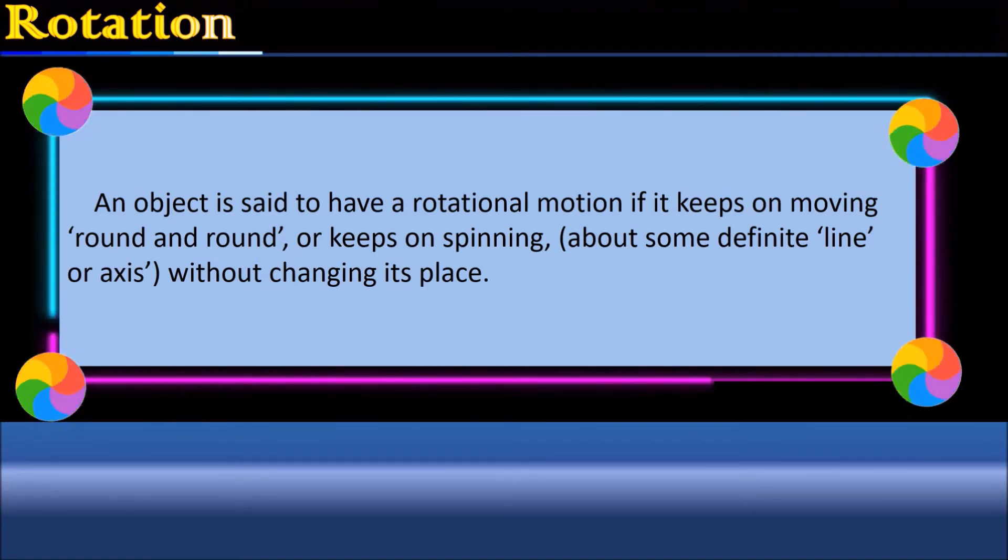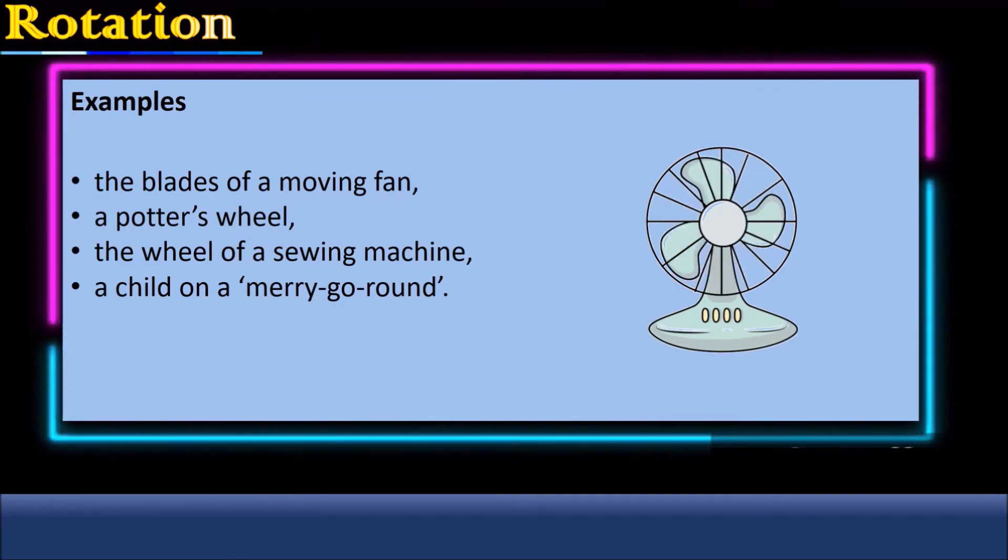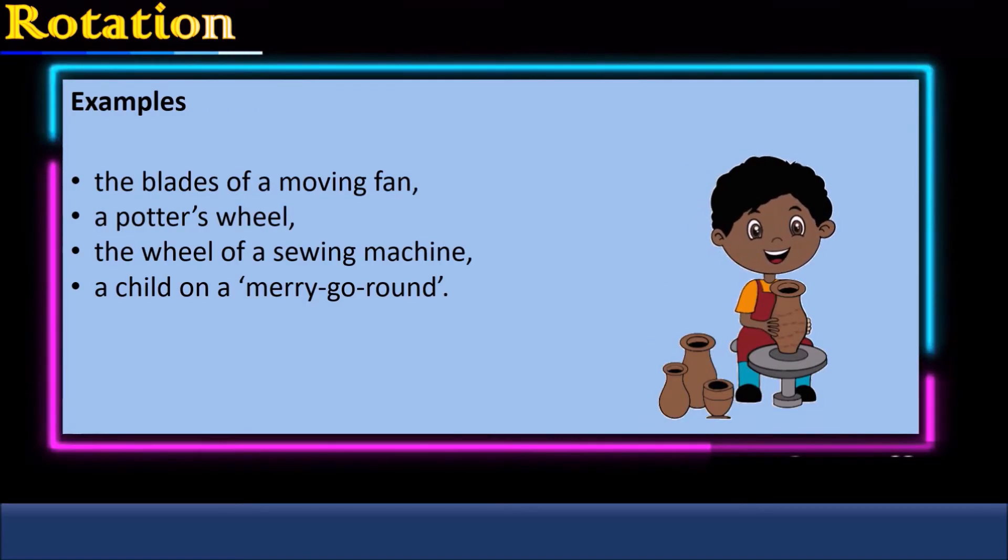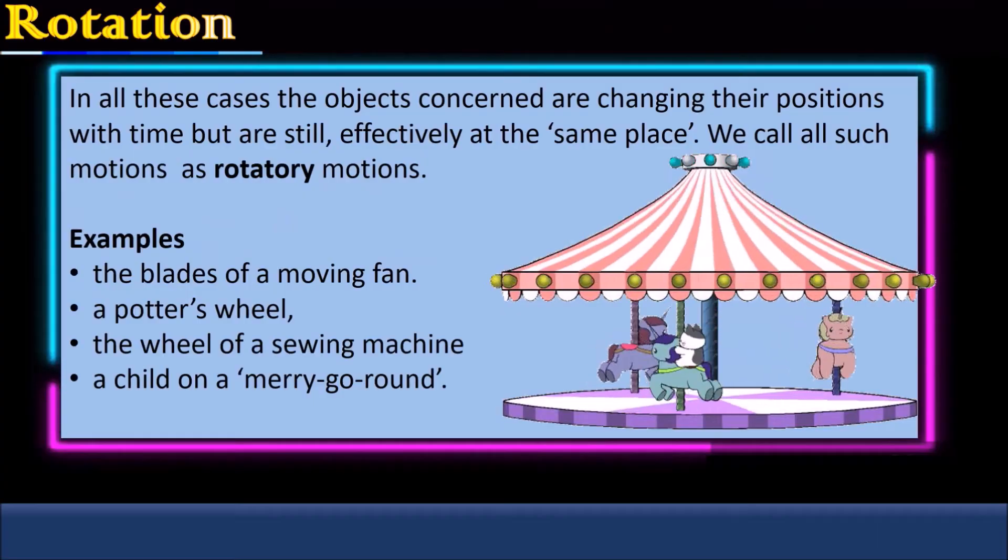Examples. Look at the blades of a moving fan. They are seen as moving but are clearly not moving along a straight line path. A potter's wheel. The wheel of a sewing machine. A child on a merry-go-round.